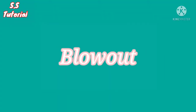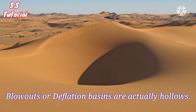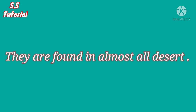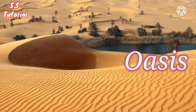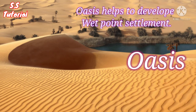Blowouts, also known as deflation basins, are nothing but hollows developed by the removal of loose and fine-grained particles by wind erosion. Some blowouts are very large in size like a basin, but they are shallow. Blowouts are observed in all deserts of the world. Sometimes blowouts reach into the underground aquifer or river, and then it is known as an oasis, which develops a wet point settlement in the desert region.